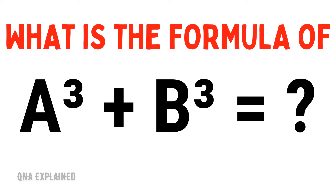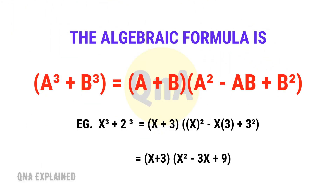What is the formula of a cubed plus b cubed? The algebraic formula is: a cubed plus b cubed equals a plus b, times a squared minus ab plus b squared.